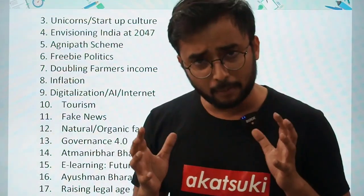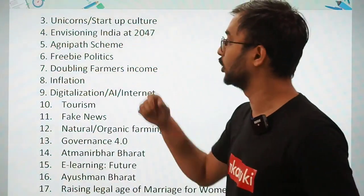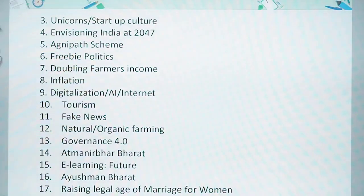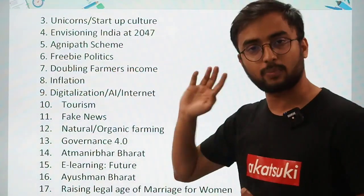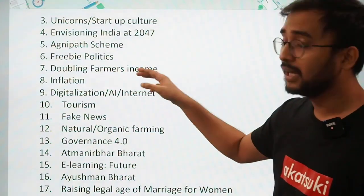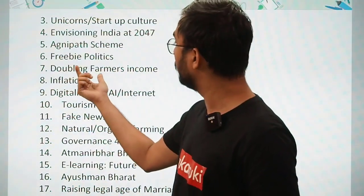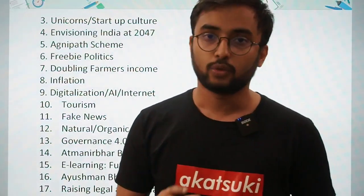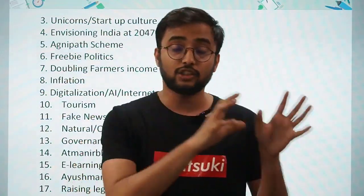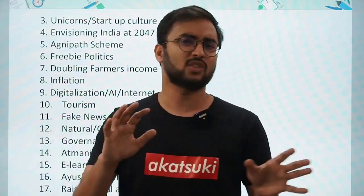Envisioning India at 2047 is also an important theme — our External Affairs Minister Jaishankar also gave a speech on this. Agnipath scheme, which was very controversial, is also an important theme. Freebie politics — as we know, various political parties in different states have started giving different freebies. Doubling the farmer's income is important this year because we had to double it by 2022, so this becomes a very important topic.